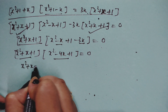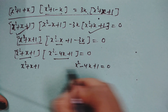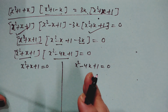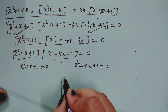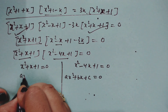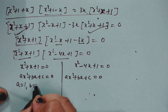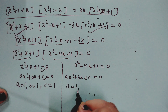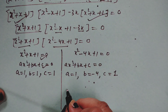We now have two quadratic equations: x² − 4x + 1 = 0 and x² + x + 1 = 0. We solve each separately using the quadratic formula x = (−b ± √(b²−4ac)) / 2a, comparing with ax² + bx + c = 0.